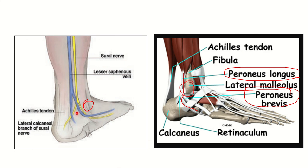In the first picture, we can see two other structures that pass behind the lateral malleolus. One is a nerve — the sural nerve — and the other is the small saphenous vein, also called the short saphenous vein. So we have two tendons — peroneus longus and peroneus brevis — and two other structures: the sural nerve and the short saphenous vein.